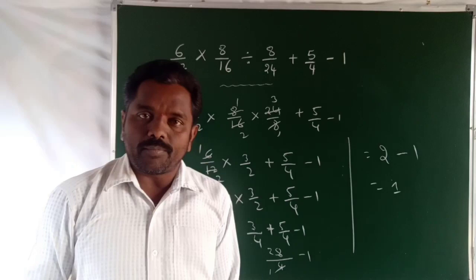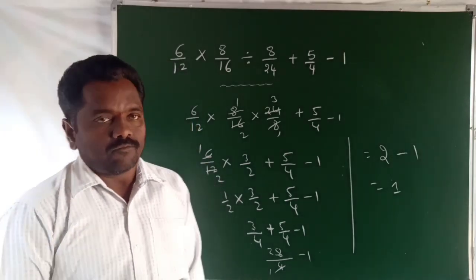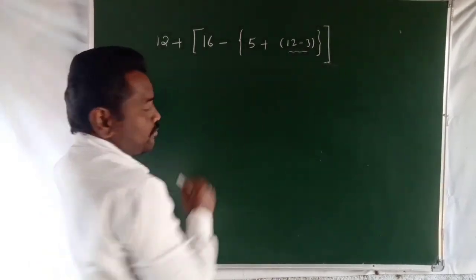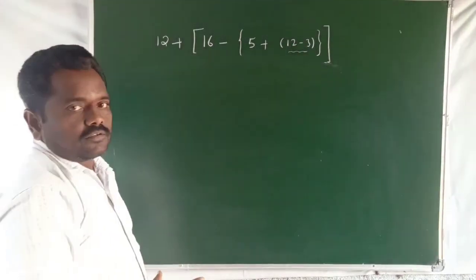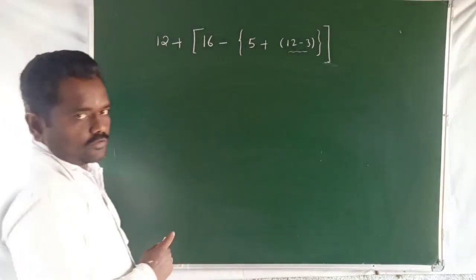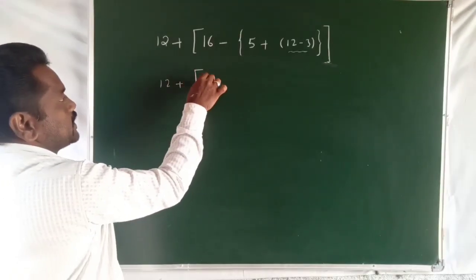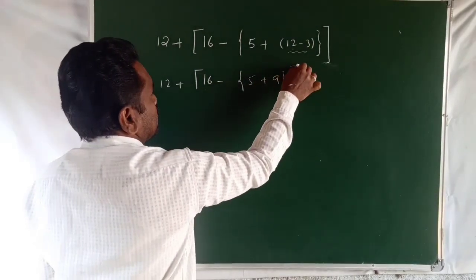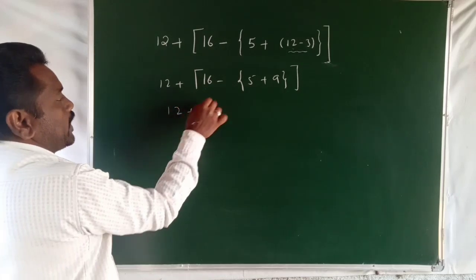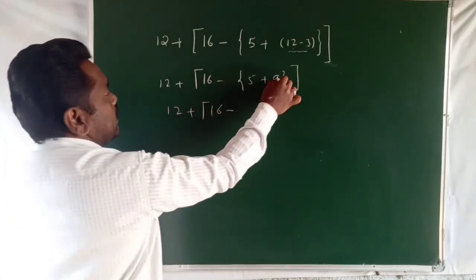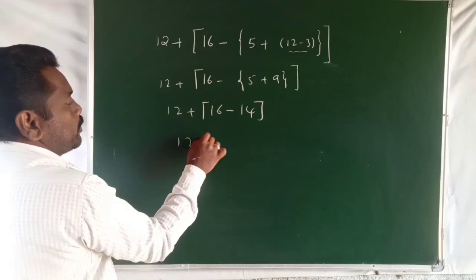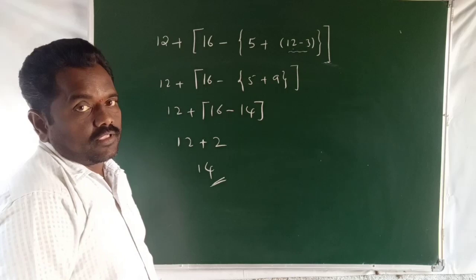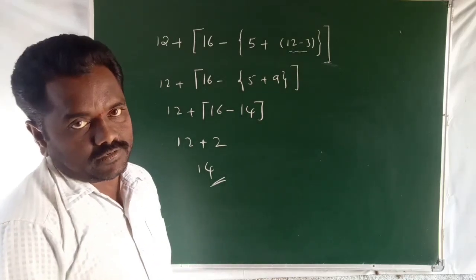Problem is bracket system. Simplify first of all inner bracket, after that curly braces, after that close bracket. So 12 plus 16 minus, so 5 plus this is 9, and that time 12 plus 16 minus 16 minus plus 14. So 12 plus 16 minus 2, that is 14. This is bracket simplification.